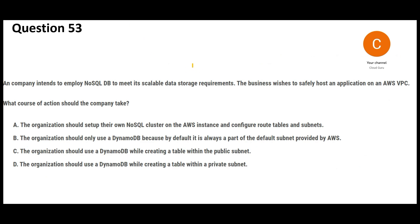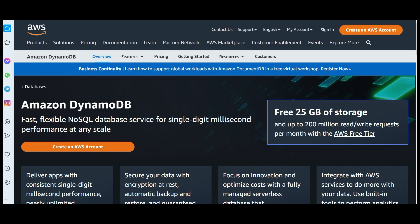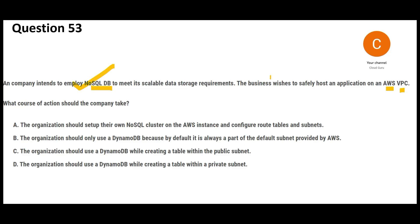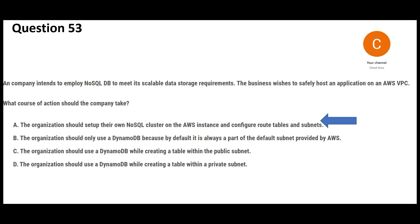Now let's look at question 3. The corporate wants a NoSQL database hosted on an AWS VPC. When you think NoSQL, DynamoDB comes to mind — it's a flexible NoSQL service offering single-digit millisecond performance. However, the problem is DynamoDB does not work in a VPC kind of setup. So blindly choosing DynamoDB as options C or D suggest would be wrong. The correct option is to set up a NoSQL cluster on an EC2 instance within the VPC, configuring your route tables and subnets accordingly.